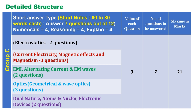For Group C, chapter-wise: Electrostatics — 2 questions, 3 marks each, 6 marks. Current electricity, magnetic effects and magnetism — 3 questions, 9 marks. EMI, alternating current and electromagnetic waves — 2 questions, 6 marks. Optics — 3 questions, 9 marks. Dual nature, atoms, nuclei and electronic devices — 2 questions, 6 marks. Total of 12 questions, answer 7 out of 12.